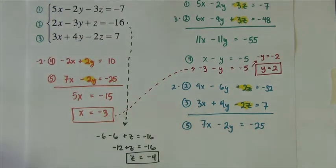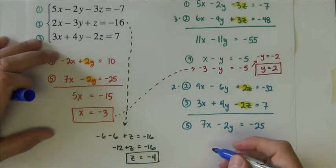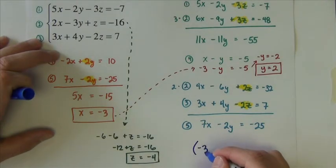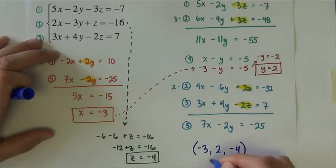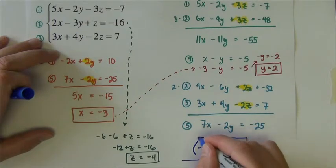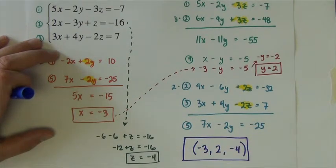So I have my x, I have my y, I have my z. I'm going to write my answer as an ordered triple: negative 3, 2, negative 4. There's my final answer.